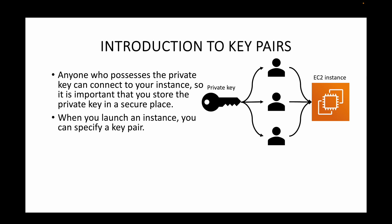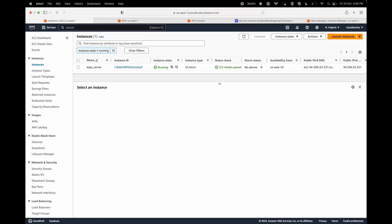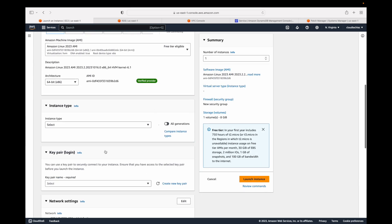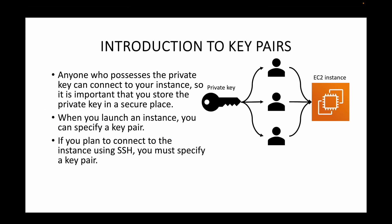It is important that you store the private key in a secure location. Whenever we launch an EC2 instance we specify the key pair — key pairs are mandatory. Without a key pair we cannot launch instances, and without a key pair we cannot connect to EC2 instances. If you plan to connect to the instance using SSH, you must specify a key pair — whether it is a Linux instance or a Windows instance.